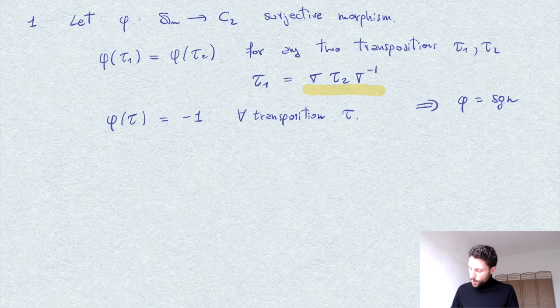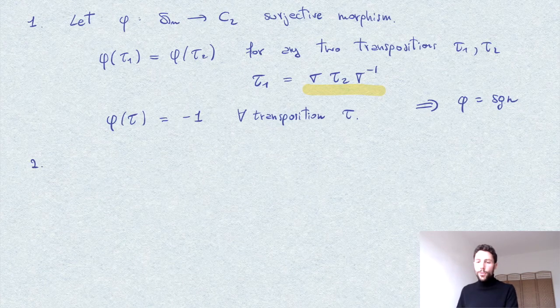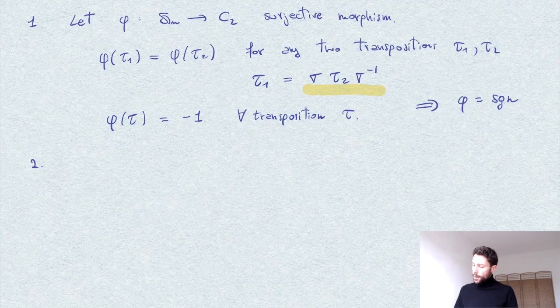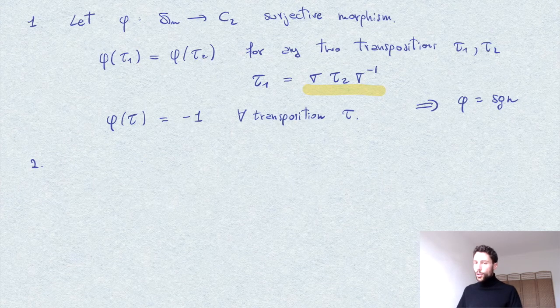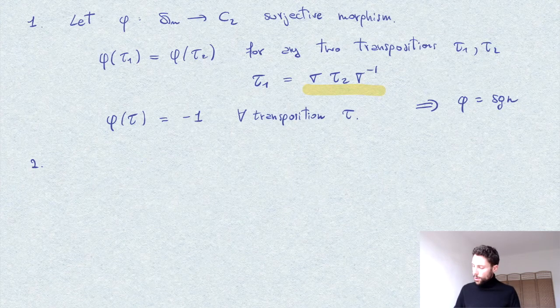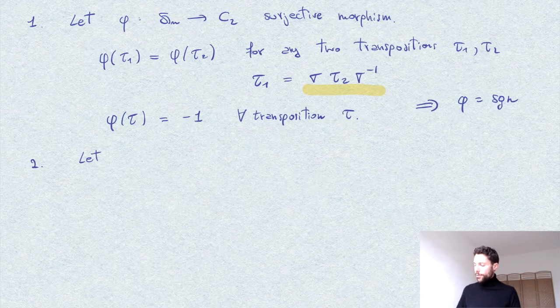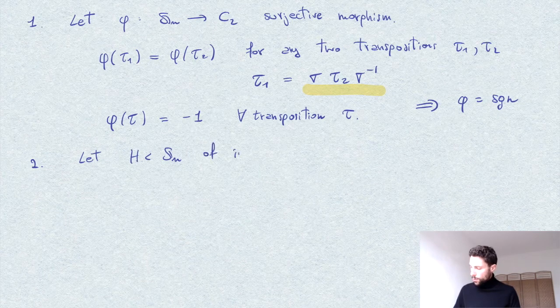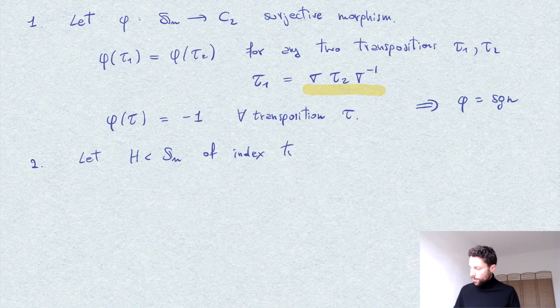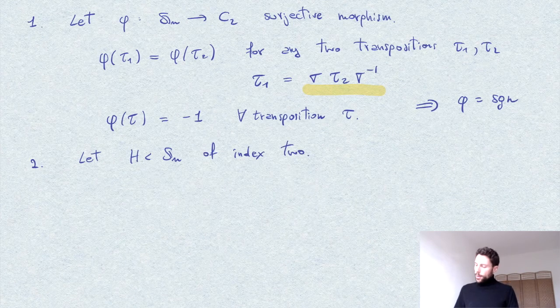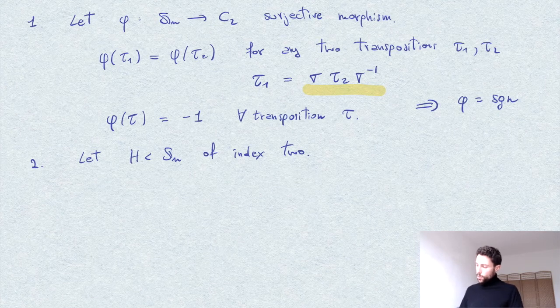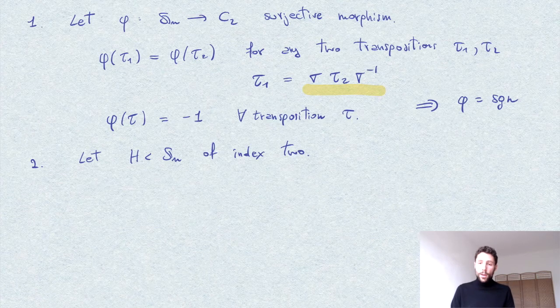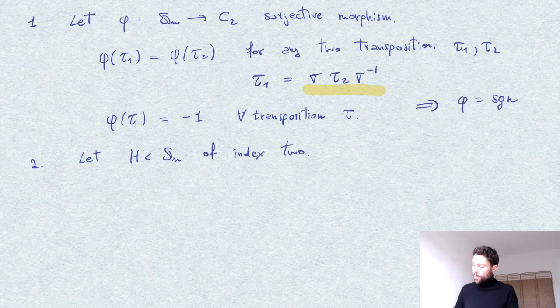Okay, so for the other way to prove that A_n is the only index 2 subgroup of S_n, we said we want to use the fact that A_n is generated by three cycles. So let's suppose we have some subgroup H of index 2. Let's look at the three cycles in H. We have clearly two possibilities.